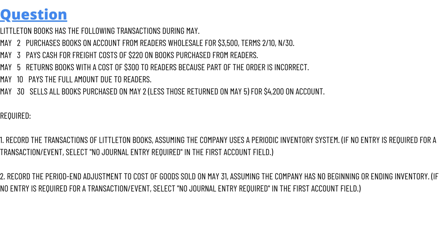And May 10, pay the full amount due to Reader. And May 30, sell all the books purchased on May 2 for $4,200 on account. What we need here is to record the transactions of Little on Books, assuming the company uses a periodic inventory system.